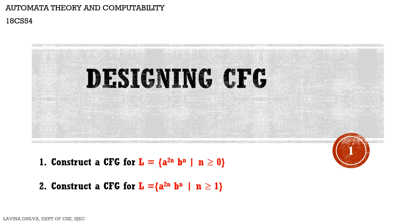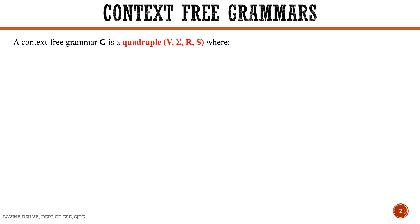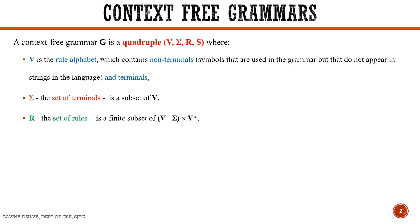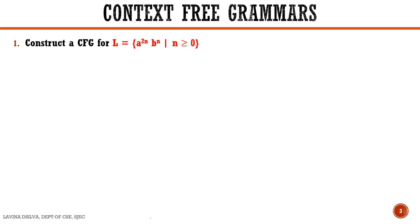The context-free grammar G is a quadruple having four components: V, sigma, R, and S, where V is the variable alphabet, sigma is the set of terminals, R is a set of rules, and S is the start symbol. Let us construct the grammar for the language L equal to a to the power 2n b to the power n where n is greater than or equal to 0.